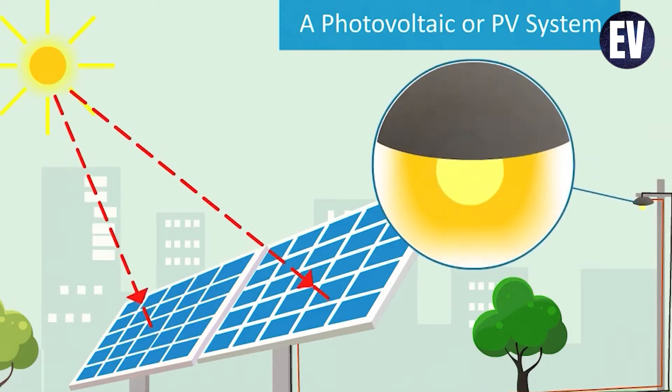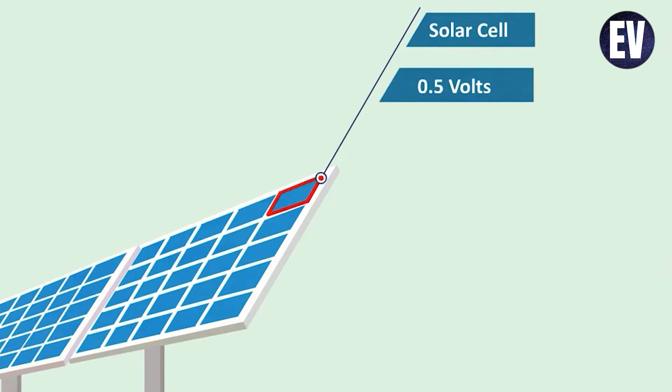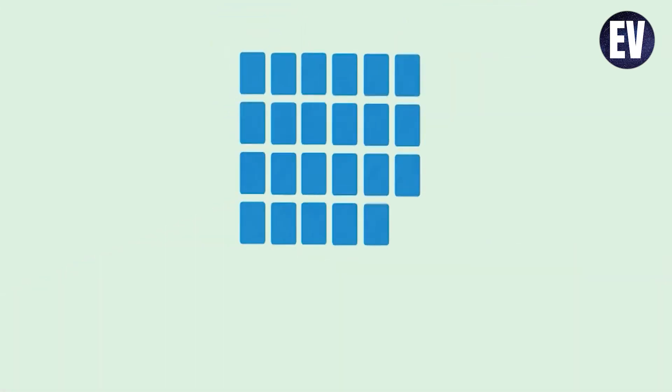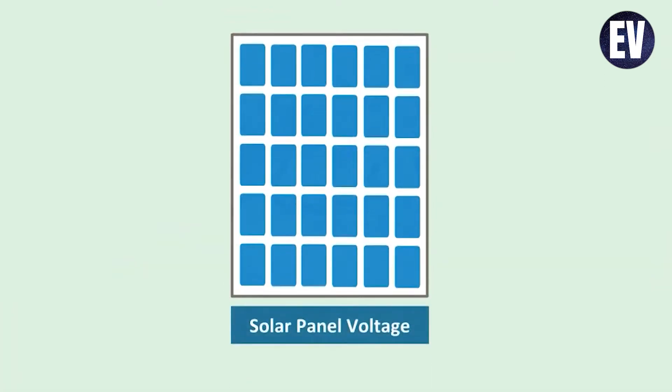The photovoltaic effect is used to generate current in solar cells. When photons with a specific threshold frequency strike a substance, electrons gather enough energy to break away from their atomic orbits and circulate freely through the material. Semiconductors with their unique features that bridge the gap between conductors and insulators are the greatest choice for this.